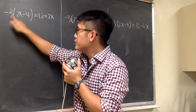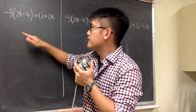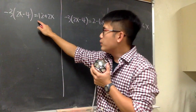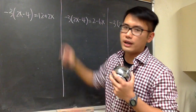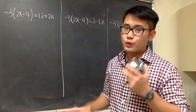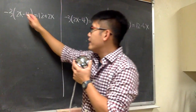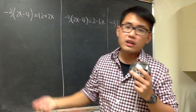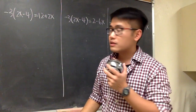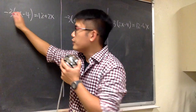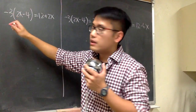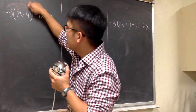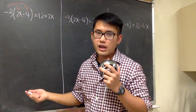We have negative 3 times the parentheses, 2x minus 4 inside, and this is equal to 12 plus 2x. What should we do first? Whenever we have an equation and there's parentheses, we take care of that first. In this case, we have the negative 3 in front, so take the negative 3, distribute into the parentheses, and work it out.